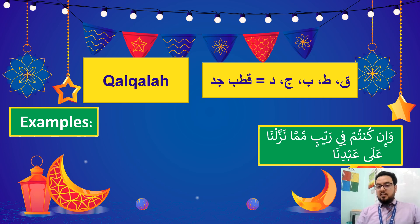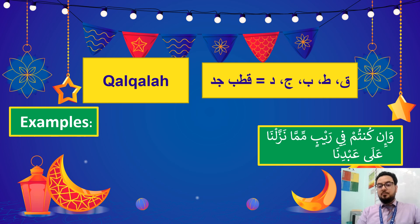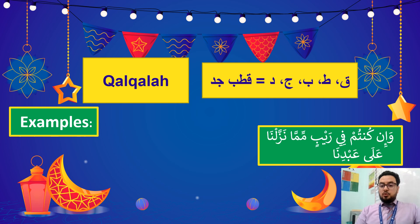So in this ayah let's do a first revision. What are the rules in this ayah? أعوذ بالله من الشيطان الرجيم. You can stop the video and find the rules, but I'll say them directly. Here there are two rules: one of them is نون ساكنة followed by كاف, and the other is نون ساكنة followed by تاء.